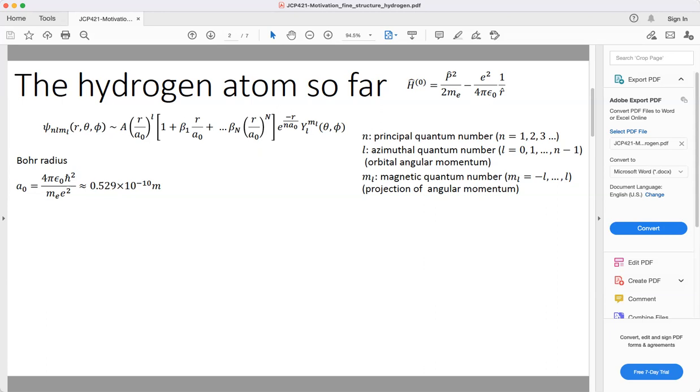To fully describe the state of the electron in the hydrogen atom, we need three quantum numbers: n, l, and ml. n is the principal quantum number and can take on any integer value: one, two, three, and so on.